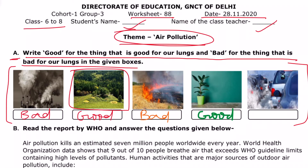Next picture: here are vehicles. What happens from vehicles? What happens to our lungs? It is harmful, so it will be bad. So we have to choose which one is good and which one is bad for our lungs.